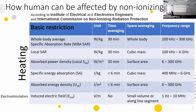The same principle applies to absorbed energy density. As with local SAR and absorbed power density, there are versions for frequencies lower than 6 GHz and higher than 6 GHz, depending on the penetration depth into biological tissue.